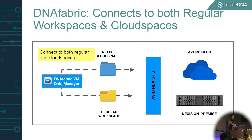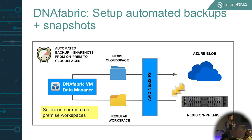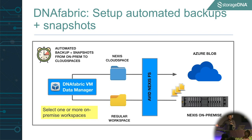Our product, DNA Fabric, lives as a virtual machine between your Nexus on-premise and your cloud spaces. The first thing it does is connect to your Nexus, discover all your workspaces, and then allow you to start doing workflows. The first simple one is you can select a bunch of on-premise workspaces, select the target cloud space, and Fabric can automatically mirror your data from one workspace to the other incrementally and automatically in the background. Think of it as a time machine that goes from your on-prem to your cloud spaces — instant cloud backup through Fabric.